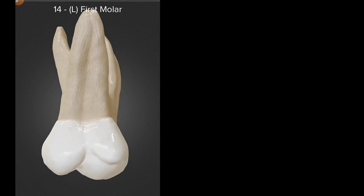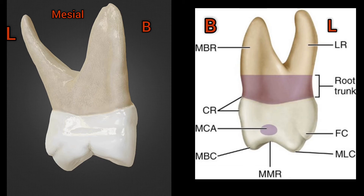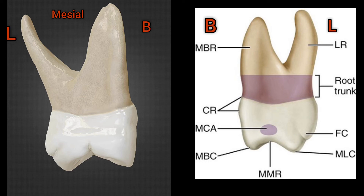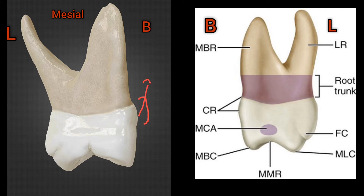From the mesial aspect, the crown is roughly trapezoid in shape. The crown is wider at the cervical area than at the occlusal area. The buccal margin is convex at the cervical one-third and flat or concave at the middle one-third. The height of contour on the buccal side is at the cervical one-third.